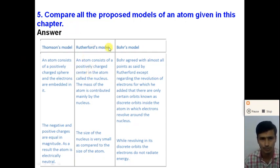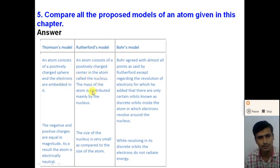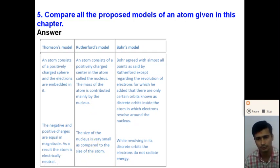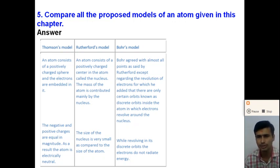Second is Rutherford's model. According to Rutherford's model, an atom consists of a positively charged center called the nucleus. The mass of the atom and all the positive charge is concentrated mainly in the nucleus, and the electrons revolve around the nucleus. The size of the nucleus is very small compared to the size of the atom.